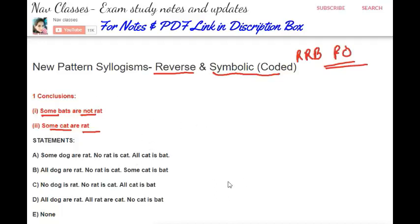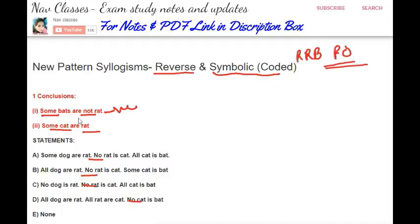The first conclusion is 'some not', meaning it is negative, and the second is positive. Any statement having no negative will be rejected. Here we can see all statements have a negative — meaning at least one 'no' in one statement. So we go by the elimination method and eliminate statements that have no negative, since we need a negative statement to get a negative conclusion. Here, no such elimination applies, so we consider all statements.